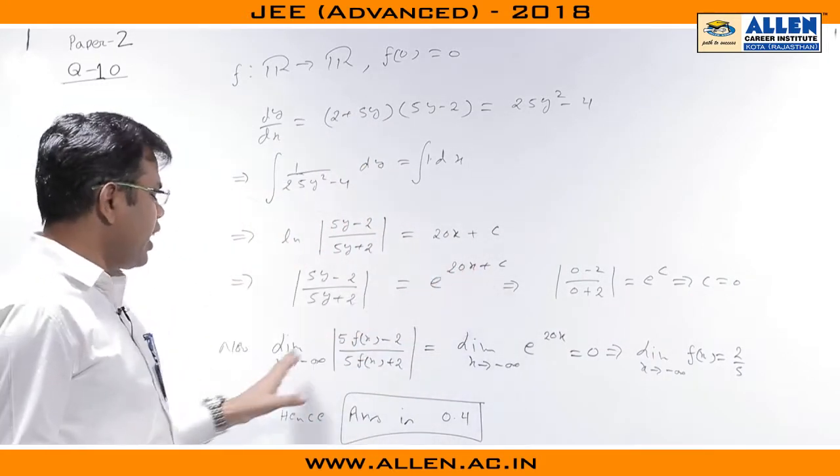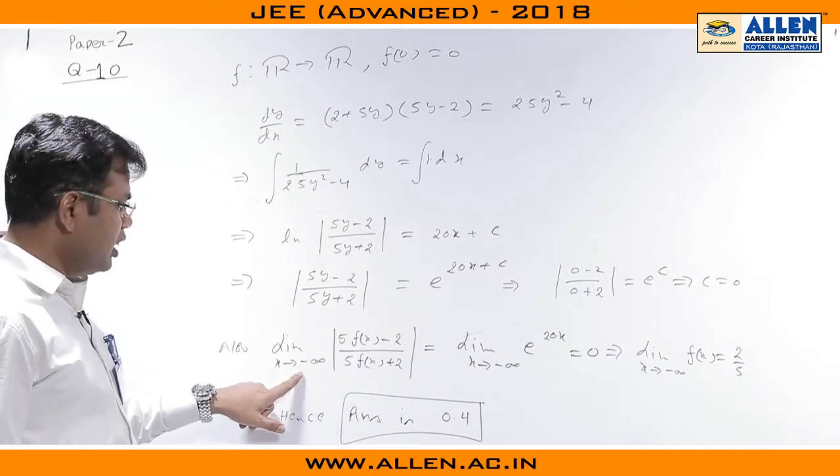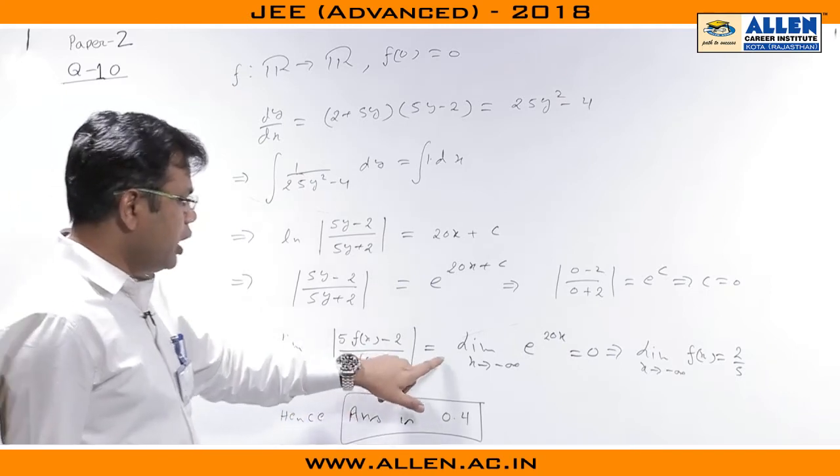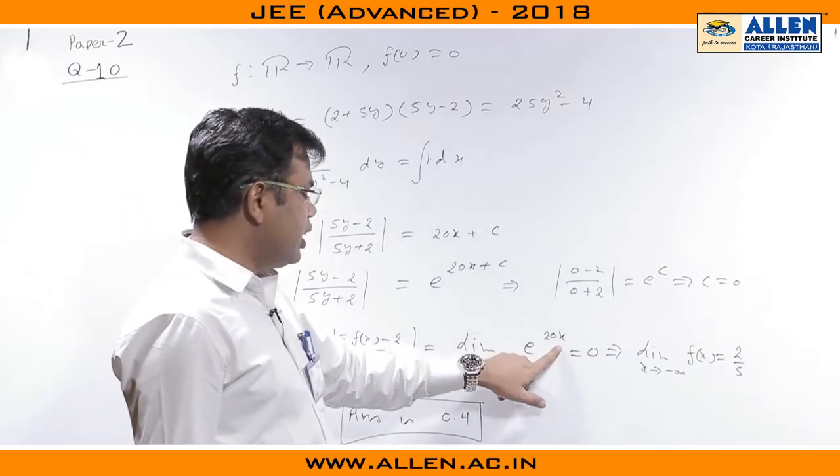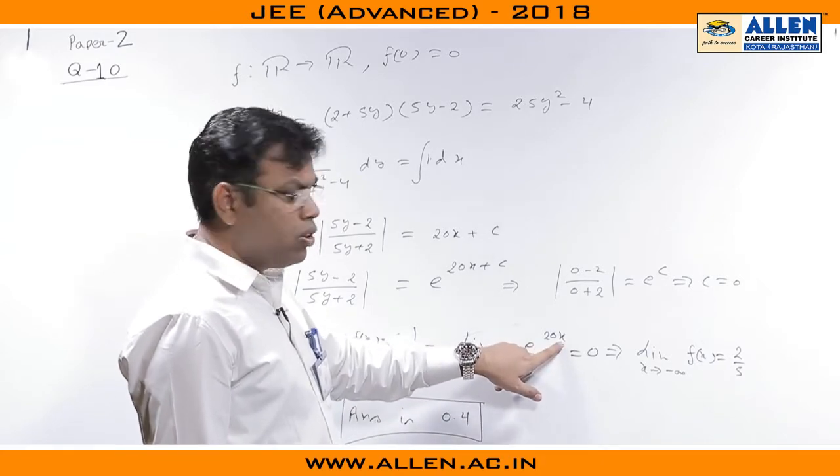Let us plug c equal to 0 and take limit of both sides of the expression when x tending to minus 1. So limit x tends to minus 1 of (5f(x) - 2)/(5f(x) + 2) equal to limit x tends to minus 1 of e^(20x). Since x is going towards minus 1, e^(20x) will go towards 0.